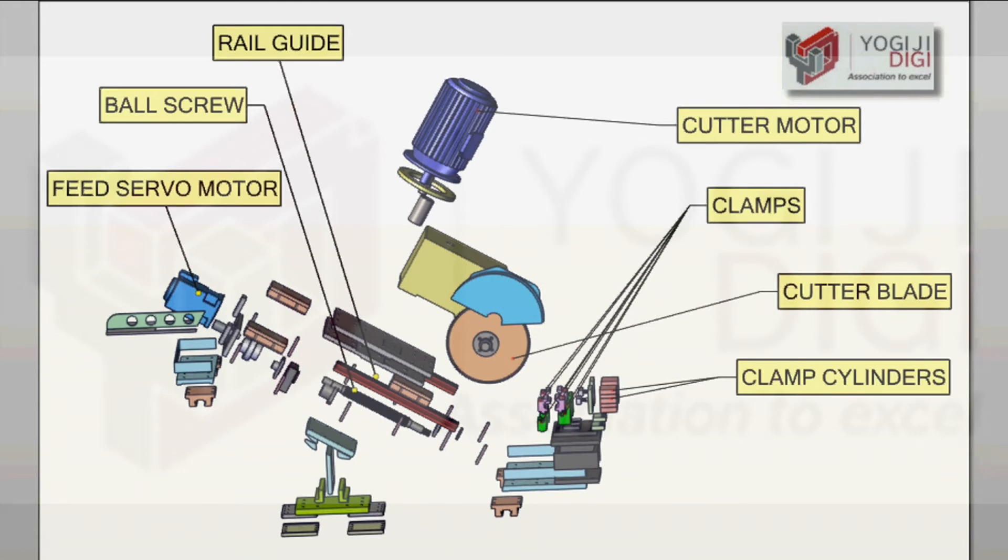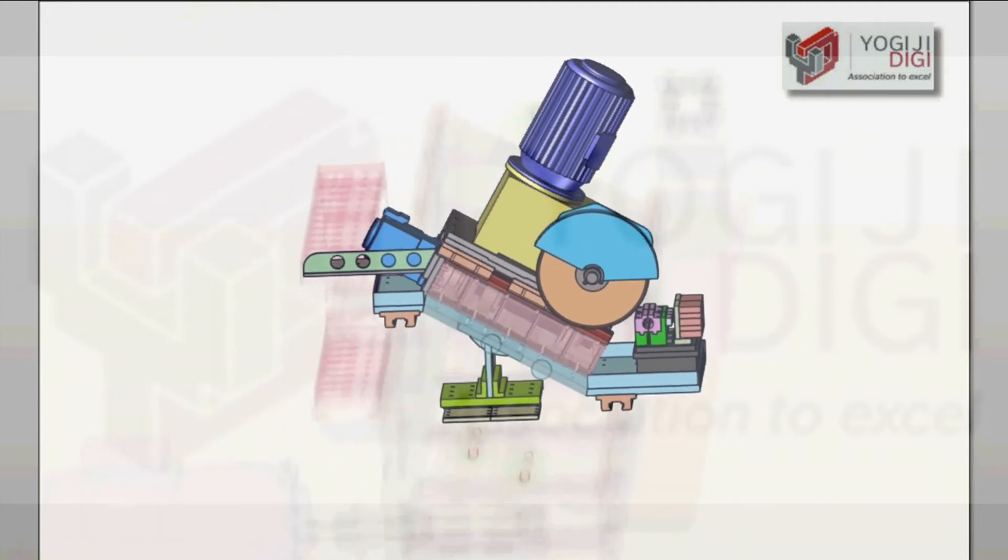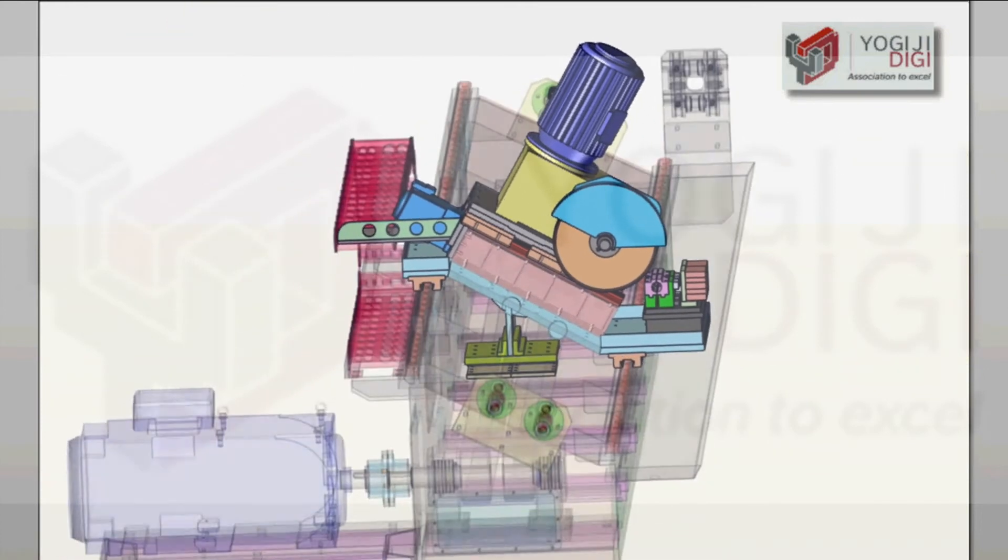Acknowledging our customers' desire to produce high-quality products, Yogi GDG products are designed keeping in mind the smallest details. One such example is the material selection of pneumatic clamps to provide scratchless precision cutting for a gamut of tube materials.